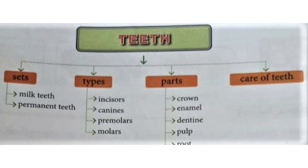And then we will do the exercise. Do you know why do we have teeth? We have teeth to bite and chew the food we eat. They also help us to speak clearly. So teeth help us to eat our food and to speak clearly.